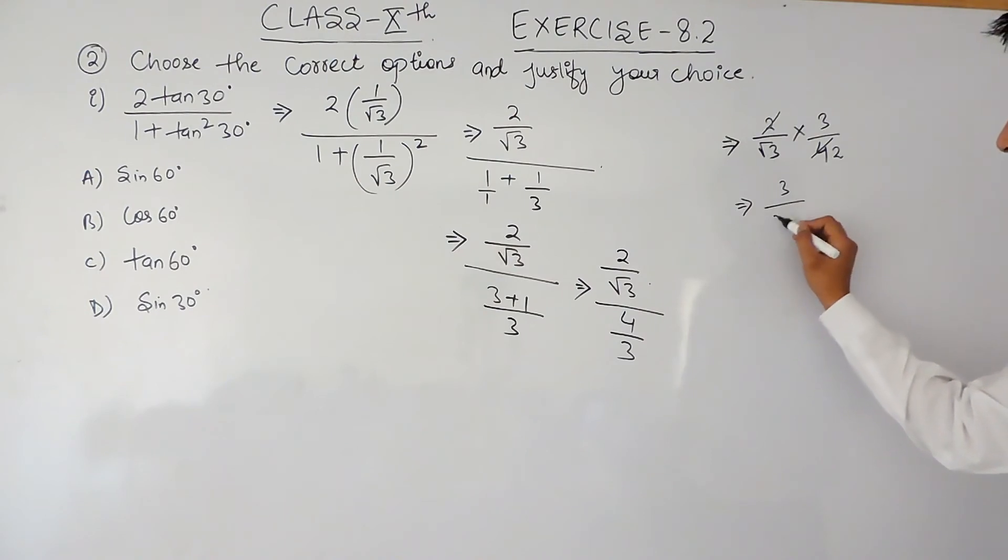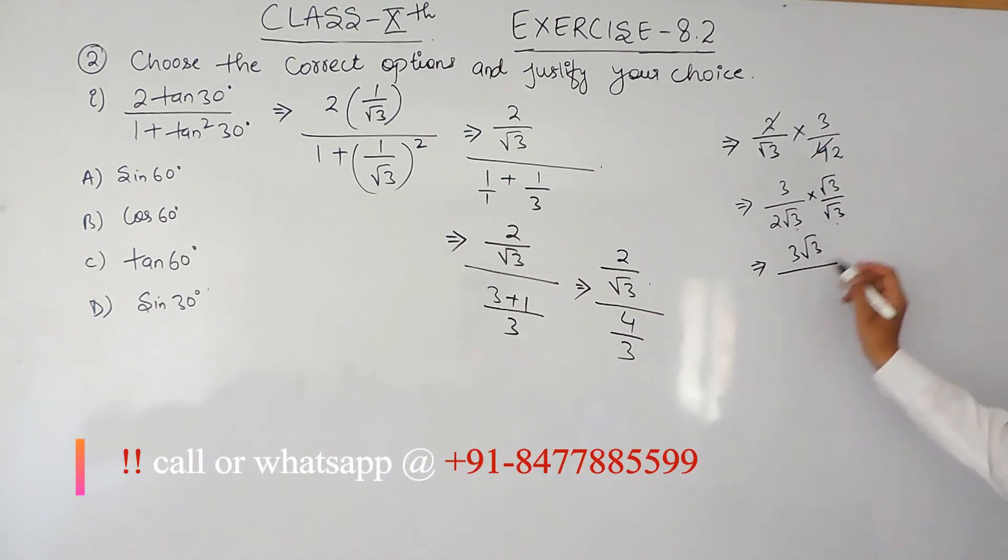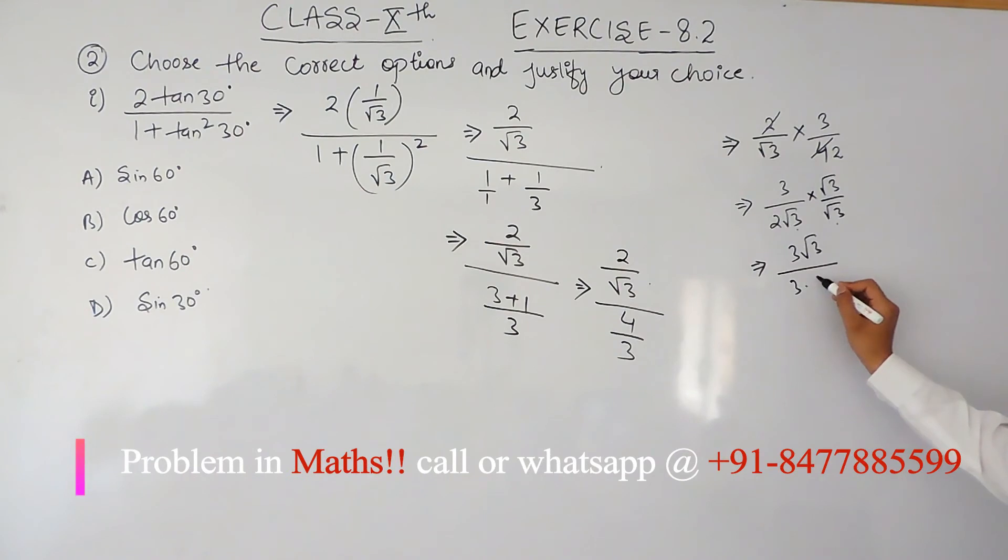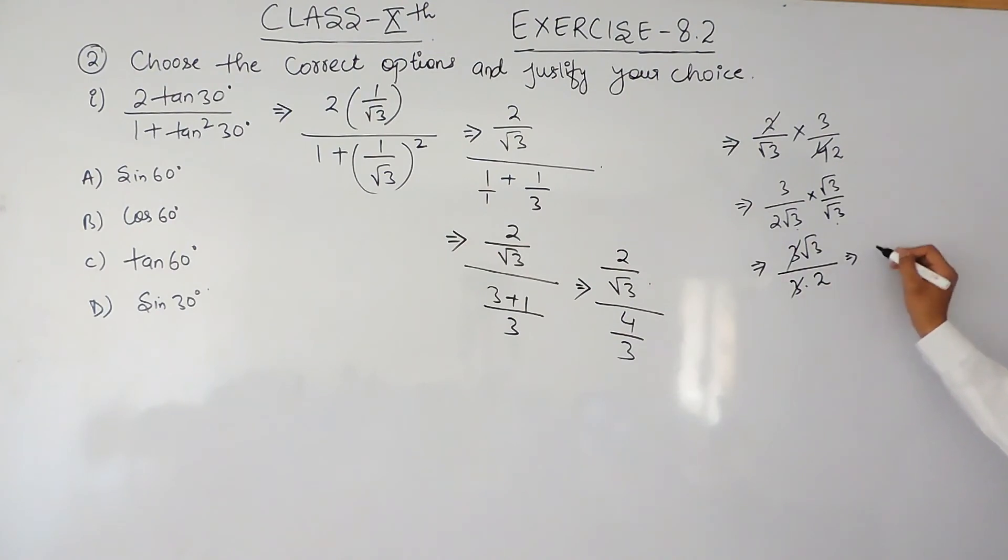Now if I rationalize this expression, it will be (3√3)/(√3 × √3 × 2). √3 times √3 is 3 times 2. Now this 3 and 3 can be cancelled, so it will be √3/2. We know that √3/2 is nothing but sin60°, because the value of sin60° is also √3/2.